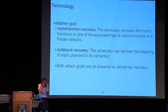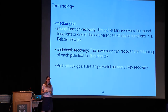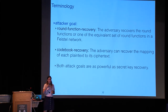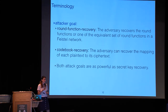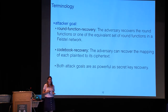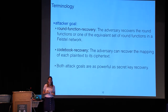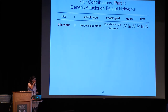Round function recovery means recovering either the true triple f0, f1, f2 or one of the equivalent triples, since they all define the same encryption. There is also codebook recovery, where the adversary recovers the mapping of messages to their corresponding ciphertexts — the simplest approach being to make oracle queries for each message. Both attack types are as powerful as recovering the secret key.